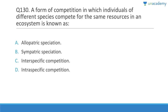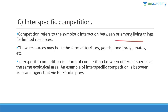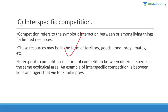Question 130: Competition in which individuals of different species compete for the same resources in an ecosystem is called interspecific competition. Competition refers to symbiotic interaction for limited resources — territory, food, mates. Interspecific competition occurs between different species in the same ecological area; examples include lions, tigers, and cheetahs competing for similar prey.